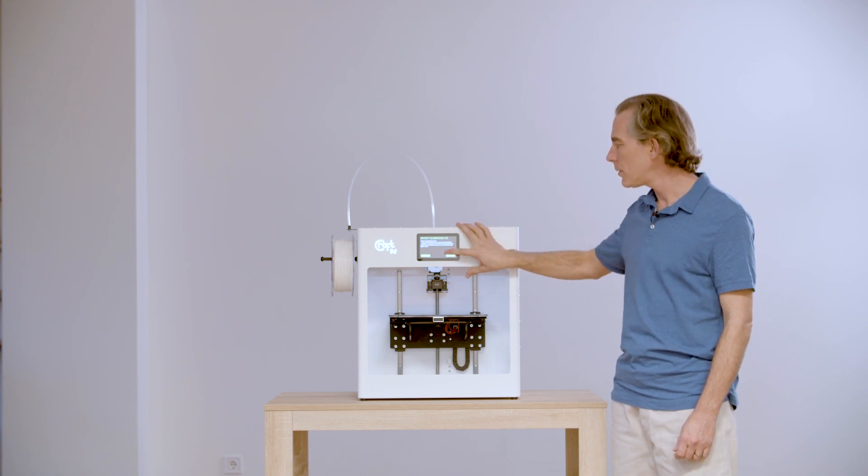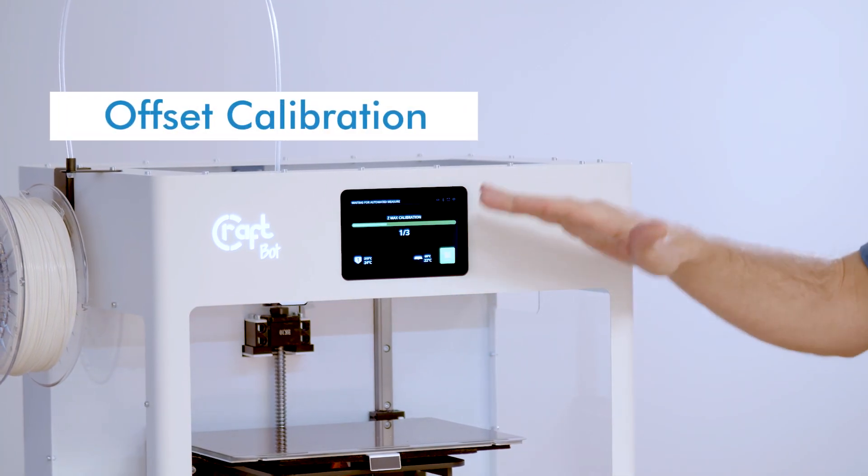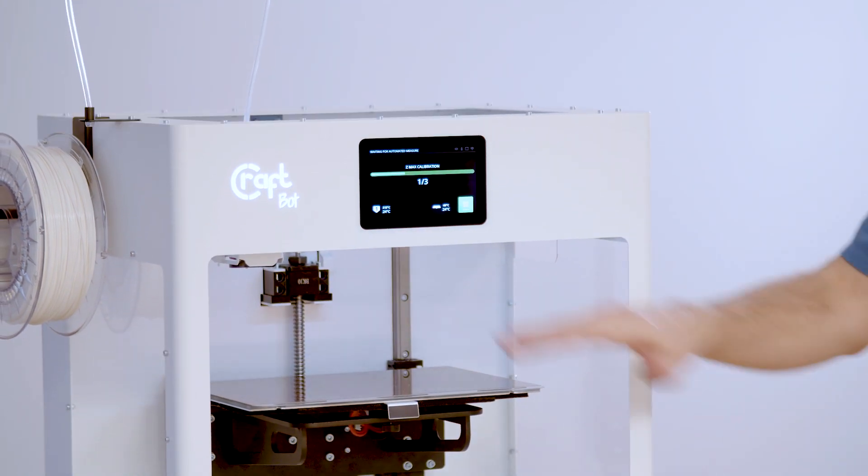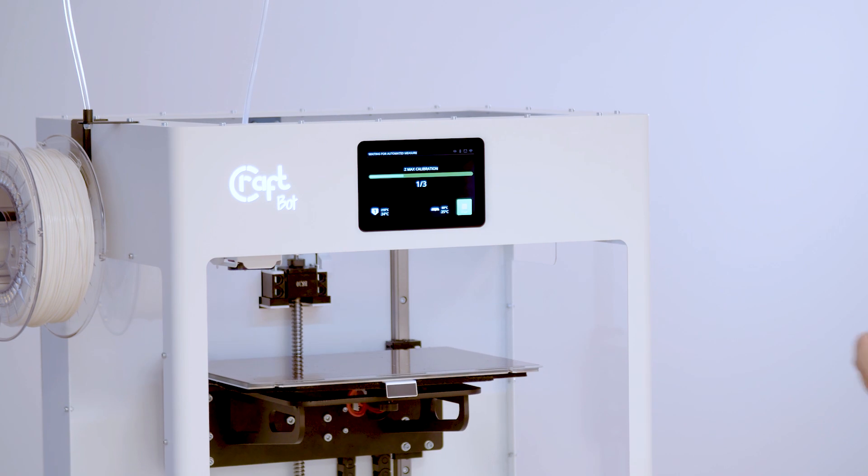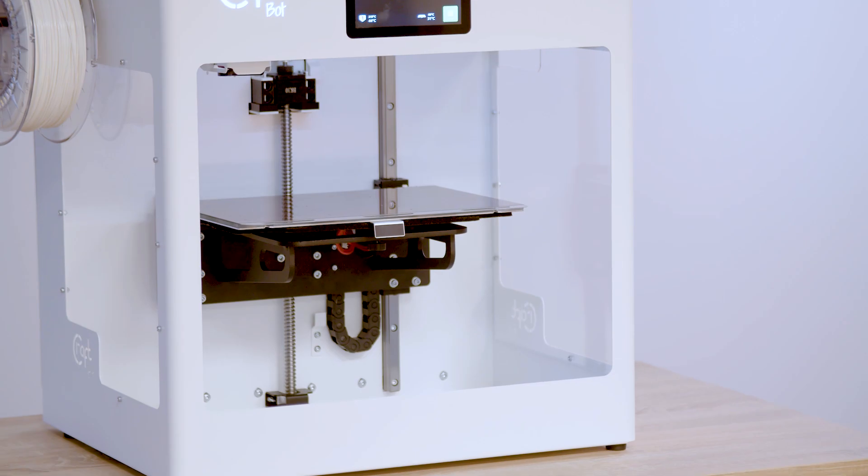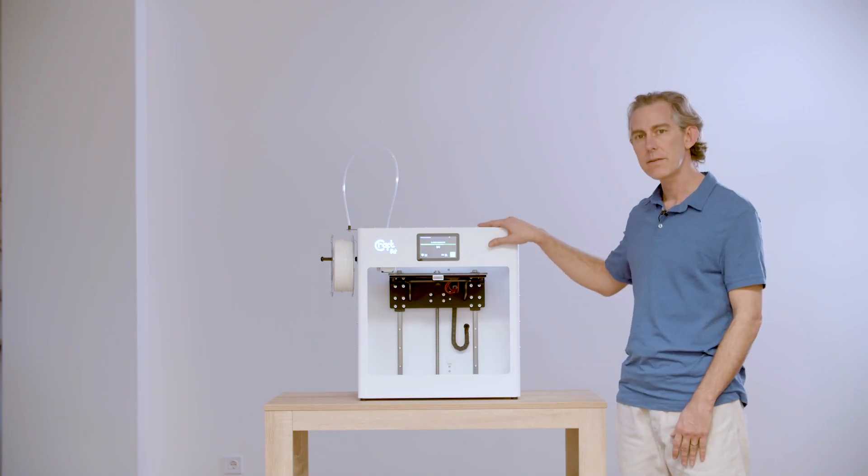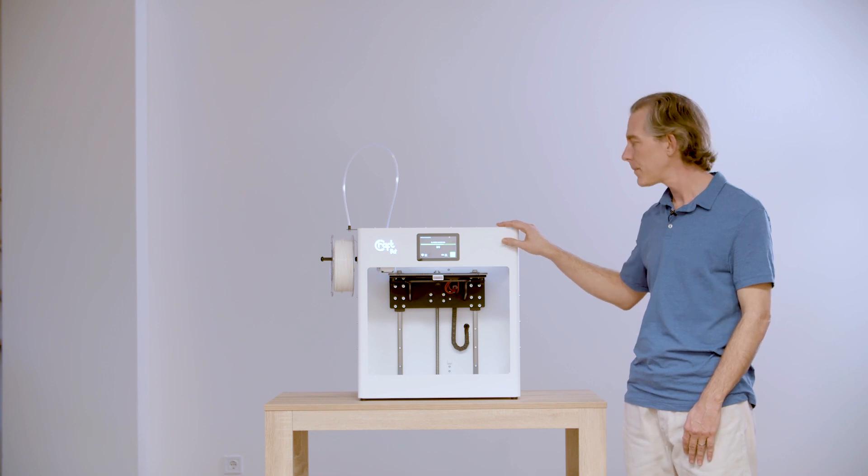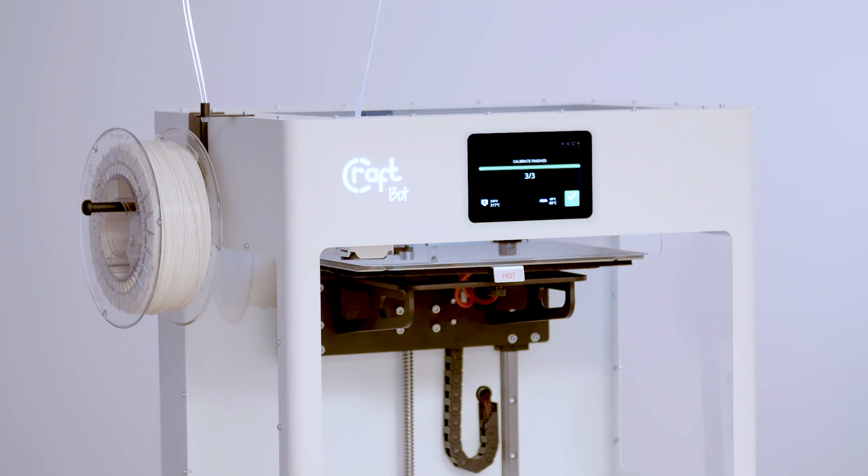Now the first thing it's going to do is it's going to check for the lowest point on the build plate, and then it's going to measure the offset between the BL touch sensor and the extruder itself. Now the printer is going to heat itself up so that it's at operating temperature when taking all of these measurements. Now the touch sensor has been calibrated with the hot end.